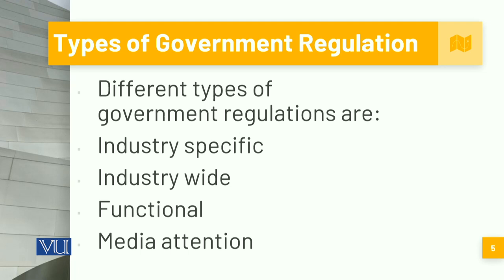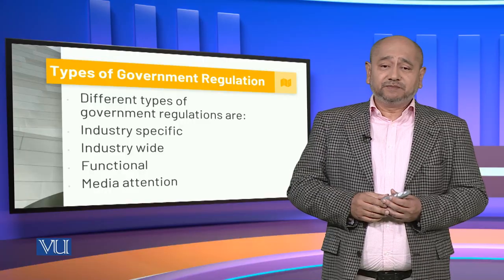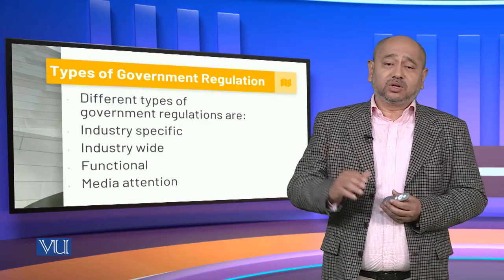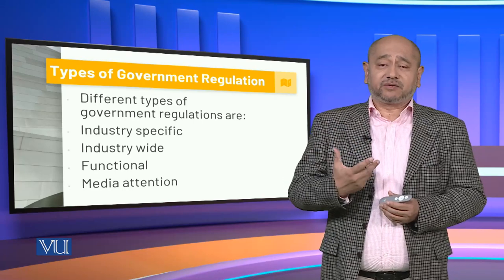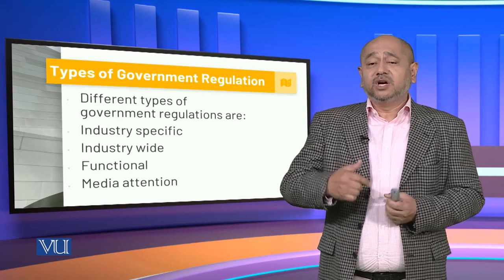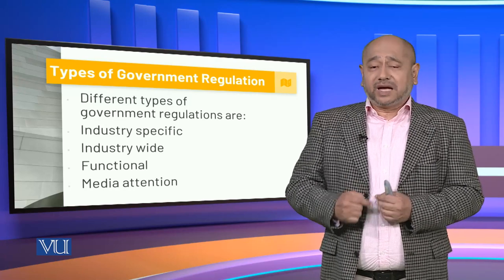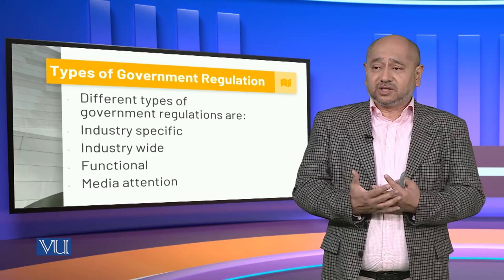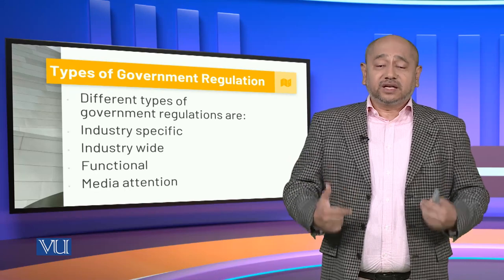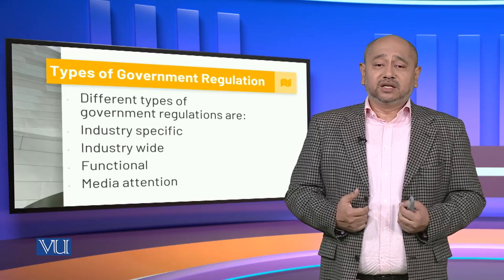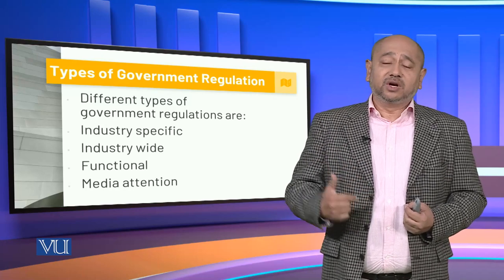There are different types of government regulations. There could be industry-specific regulations — different industries have been given impetus in each budget, such as the automobile industry in recent years or the power generation sector when many new independent power producers emerged. It could be industry-wide or across the board, whereby different fiscal or monetary benefits are given to different industries. It could be more functional — reducing the cost of doing business, bringing down controls, eliminating licenses, and opening up different sectors. The government also plays a role as a media disseminator so that people become more aware of what is happening.